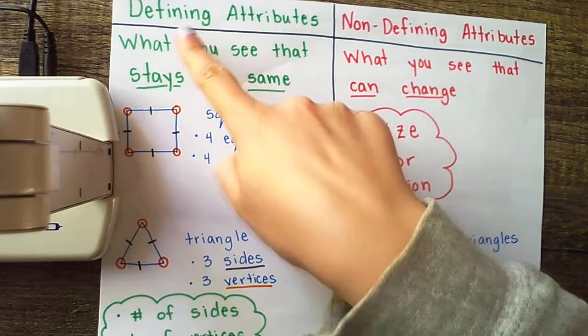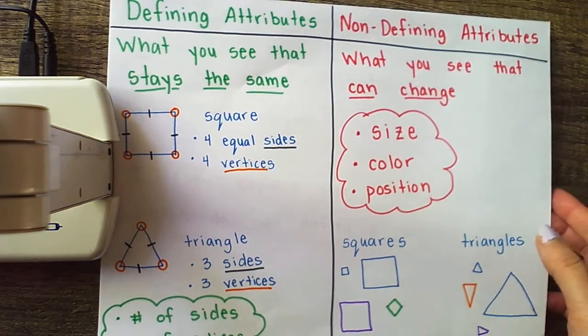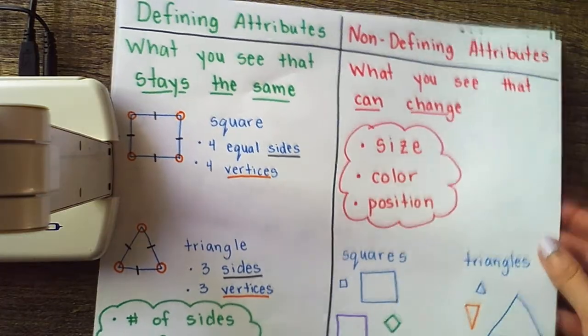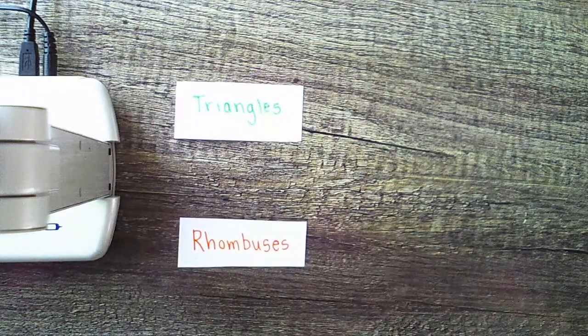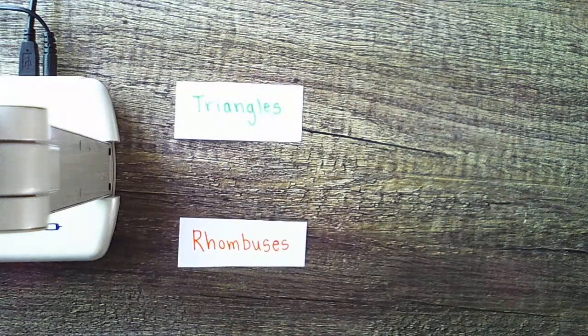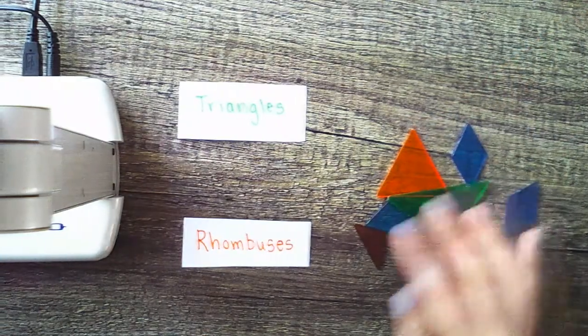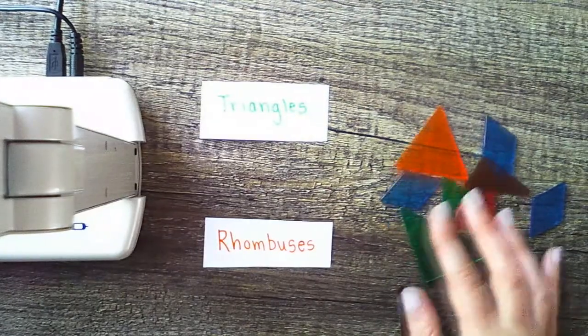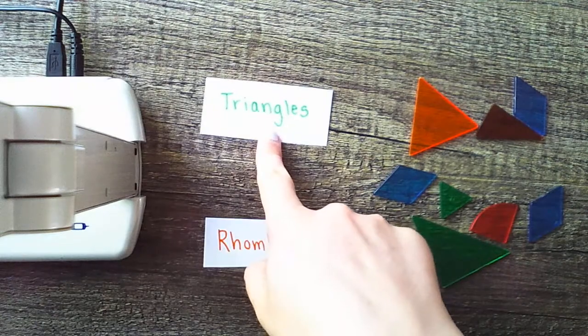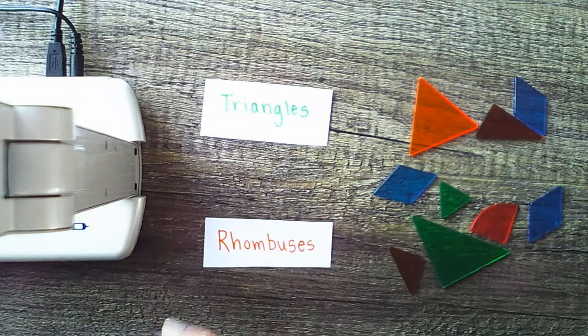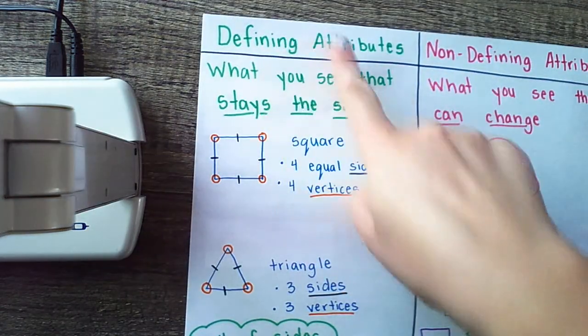Our defining attributes are what tell us what shape we've got. So our job today is this. We're going to use these defining attributes to do some sorting. And we need to decide which shapes we have and whether they belong in one category or another. So here's our first set of shapes. We've got a group here and we need to decide whether these shapes belong with triangles, rhombuses, or neither at all.